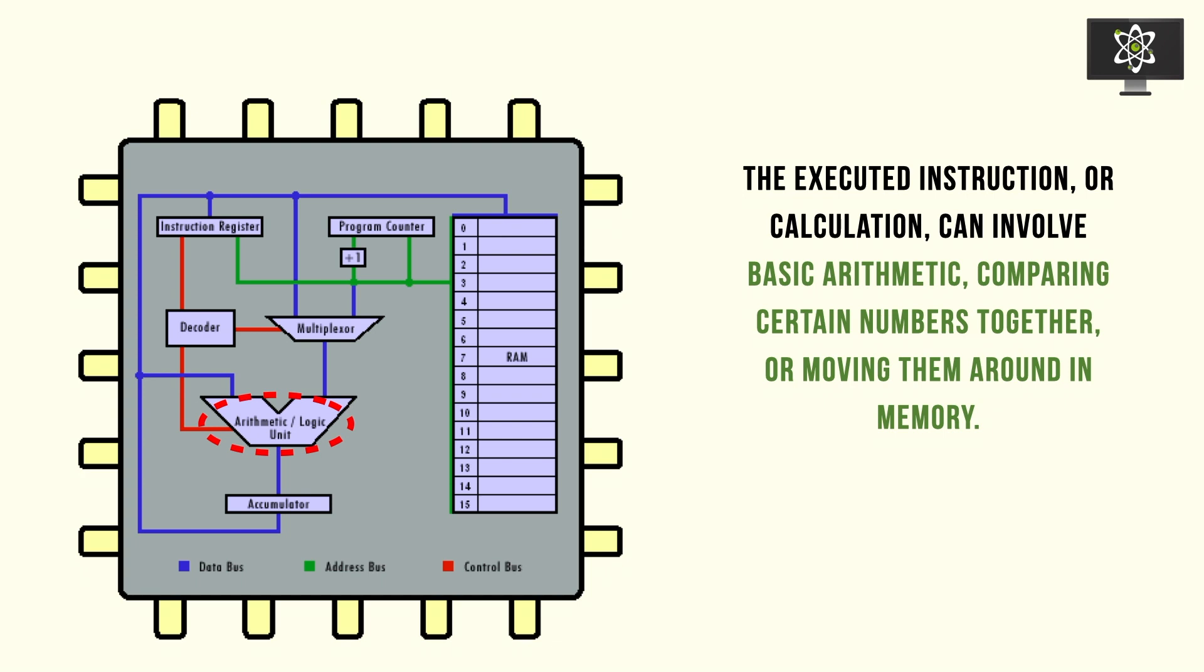The executed instructions can involve things like basic arithmetic, comparing numbers together, and moving them around in memory. These calculations are very simple, but they must be understood by the ALU.